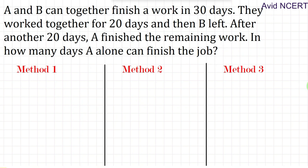In the first method: A and B can together finish the work in 30 days. That is, A plus B can finish the work in 30 days, which means one day's work is 1/A plus 1/B equals 1/30. This is the first equation.